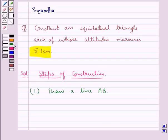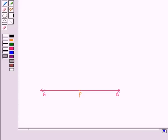Now in the next step we mark any point P on the line AB. So this is the point P on the line AB.